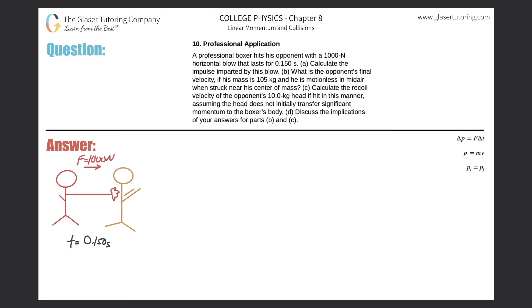Number 10, professional application: A professional boxer hits his opponent with a 1000 Newton horizontal blow that lasts for 0.15 seconds. Letter A: Calculate the impulse imparted by the blow. Alright, so just remember that impulse is literally the same thing as change in momentum.